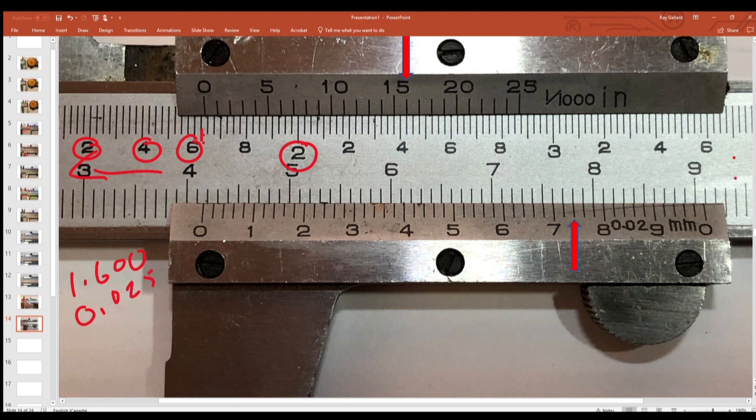Let's add them all up together. That's a 1. Carry that over. That's a 4. That's a 6. That's a 1. So that's 1 inch, 641 thou.